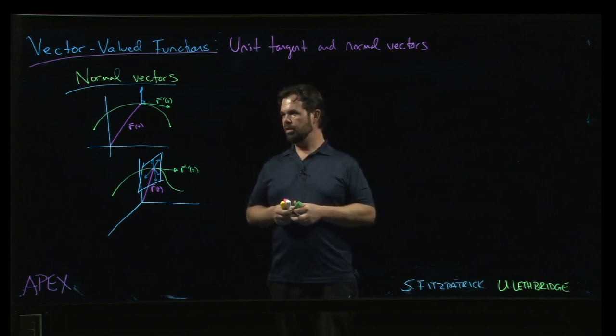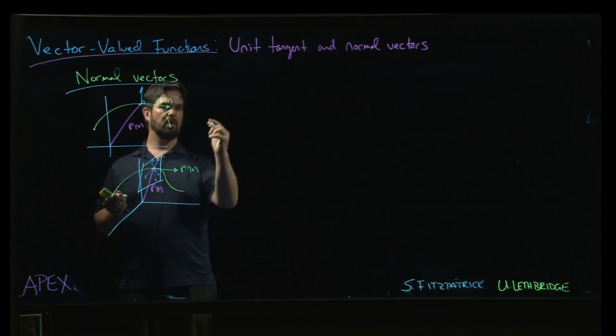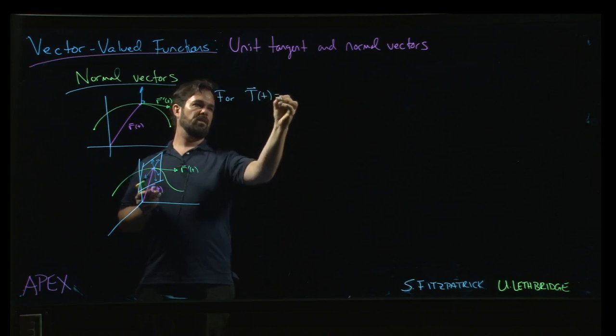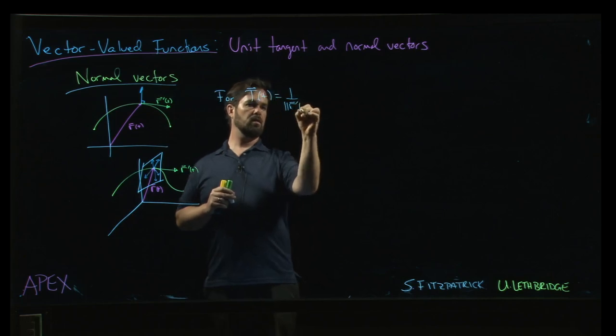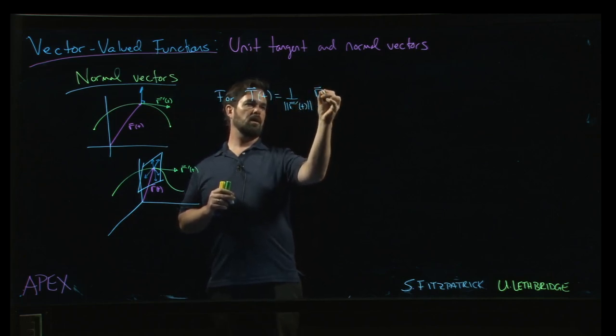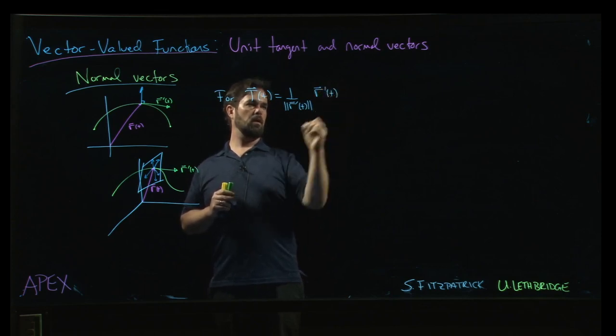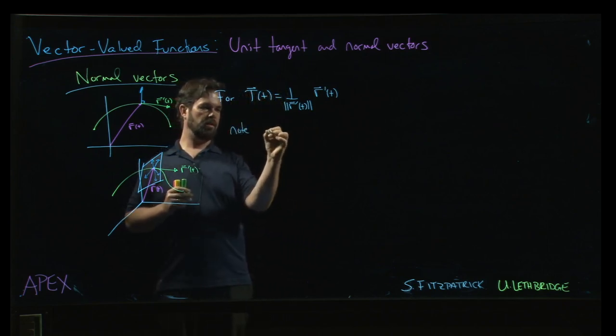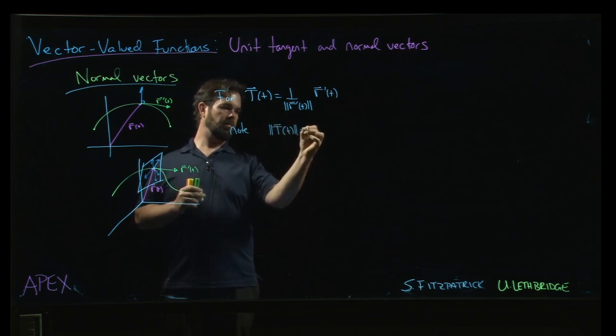And so what we do is we say, okay, well, let's first of all work with the unit tangent vector. So we're going to take the unit tangent vector. So remember that this is 1 over the magnitude of r prime times r prime of t. And now the main thing here is note that the magnitude, essentially by definition, the magnitude is 1.